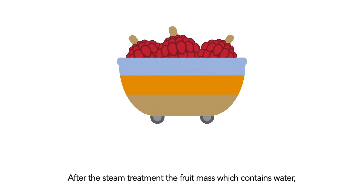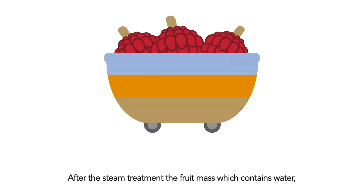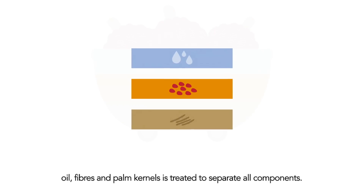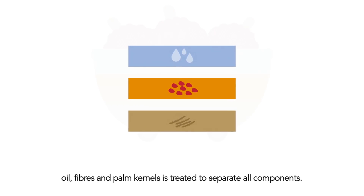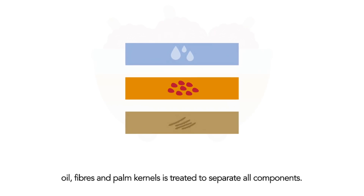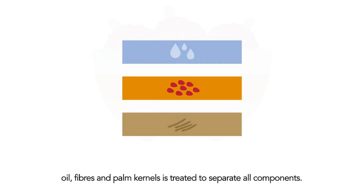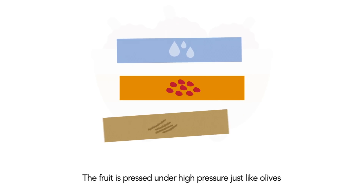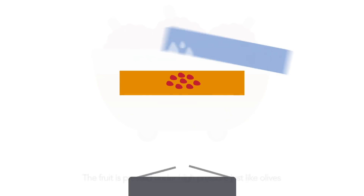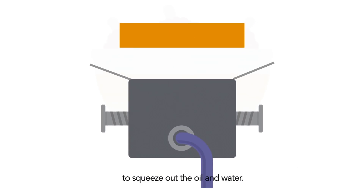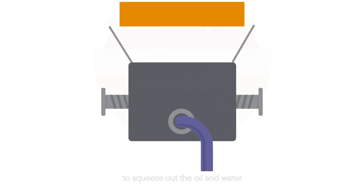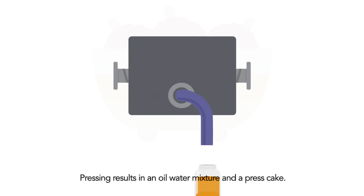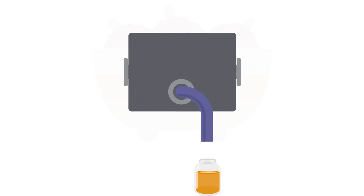After the steam treatment, the fruit mass — which contains water, oil, fibres and palm kernels — is treated to separate all components. The fruit is pressed under high pressure, just like olives, to squeeze out the oil and water. Pressing results in an oil-water mixture and a press cake.